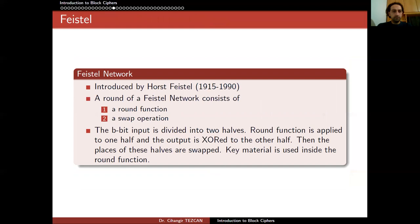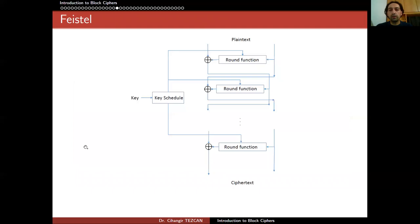Let's move on to Feistel ciphers. These ciphers were introduced by Horst Feistel. A round of a Feistel network consists of a round function and the swap operation. The b-bit input is divided into two halves. The round function is applied to one half, and the output is XORed to the other half. The places of these halves are then swapped. Key material is used inside the round function most of the time.